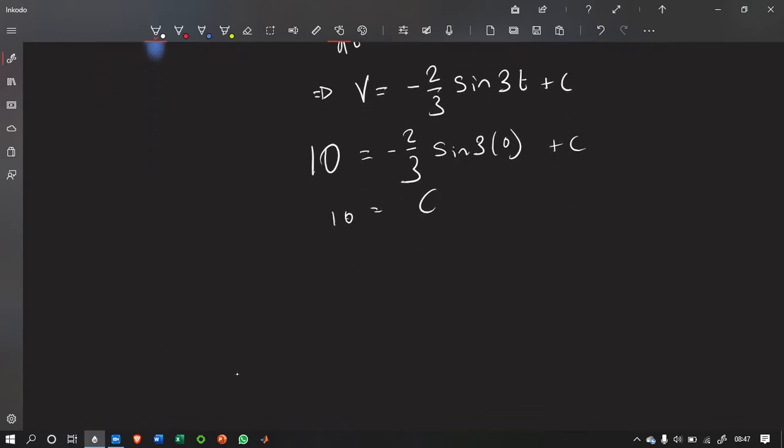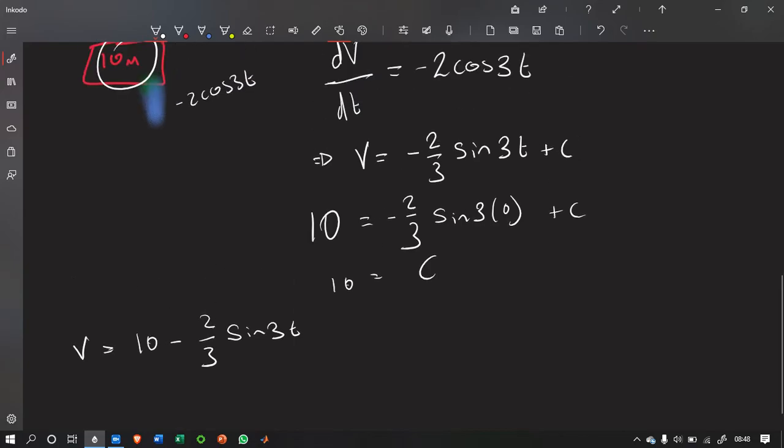So, now that we've got a full equation, which would be v is equal to... We'll start with a 10 because it makes it look cleaner. 10 minus 2 over 3 sin 3t.